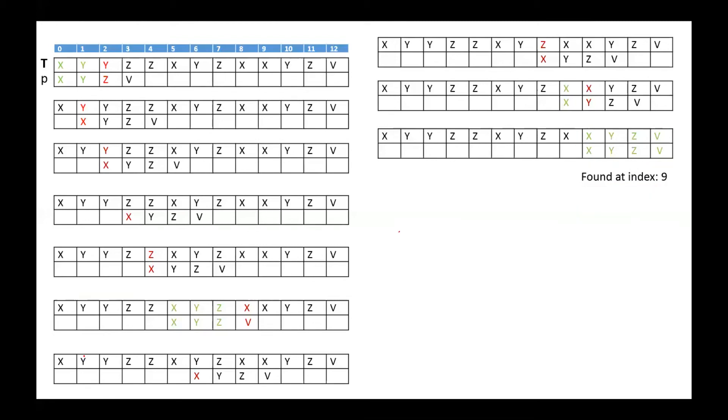As you see in the naive algorithm, the external loop performs in the worst case n minus m plus 1 comparisons, and in the worst case we have m comparisons in the internal loop. So big O is O(nm).